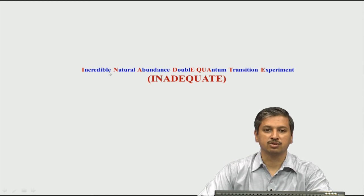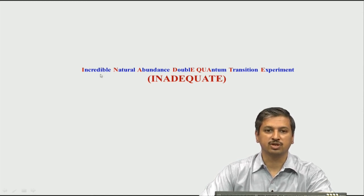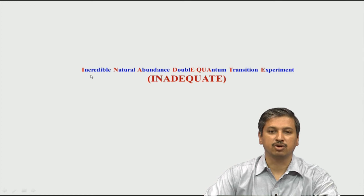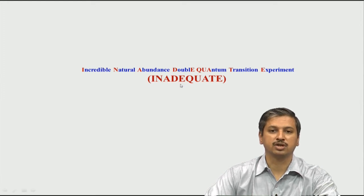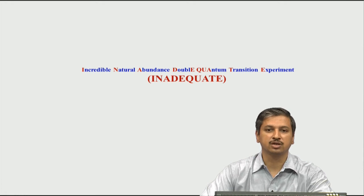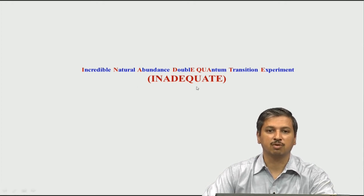The name sounds very complicated, but the experiment is actually quite simple. What it tries to do is correlate the chemical shifts of carbon to carbon — so our focus is now on carbon-to-carbon correlation. This is typically a carbon-carbon correlation experiment, used very frequently in chemistry, though not so much in biological molecules because the sensitivity is very low.